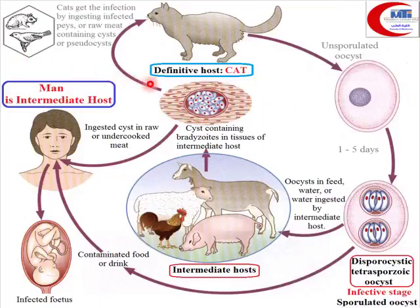The definitive host is the cat. The cat excretes unsporulated oocysts. Unsporulated oocyst means immature oocyst. This immature oocyst will need some time to mature — into what?